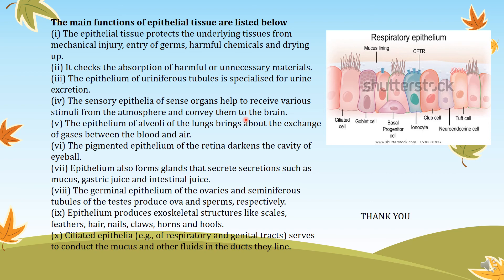The epithelial tissues of the skin help in sensing hot, cold, smooth, or rough sensations, sending that information to the brain. The epithelium of the alveoli of the lungs brings about the exchange of gases between the blood and the air — the alveoli have squamous epithelial tissue helping in gas exchange. The pigmented epithelium of the retina darkens the cavity of the eyeball. Epithelium also forms glands that secrete mucus, gastric juice, and intestinal juice. The germinal epithelium of the ovaries and seminiferous tubules of the testis produce ova and sperms respectively. Epithelium produces exoskeletal structures like scales, feathers, hair, nails, claws, horns, and hooves. Ciliated epithelium in the respiratory or genital tract serves to conduct mucus and other fluids in the ducts they line.